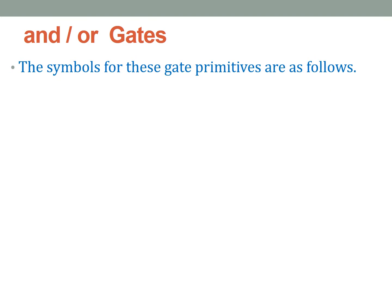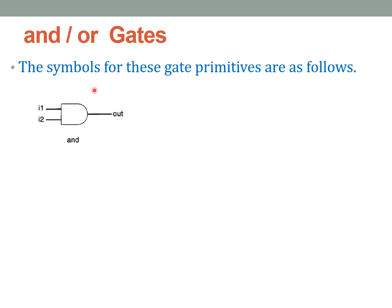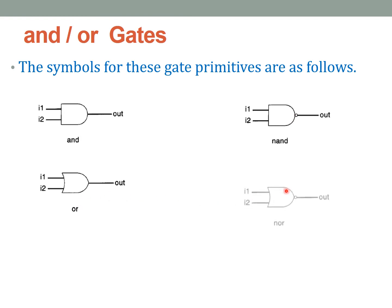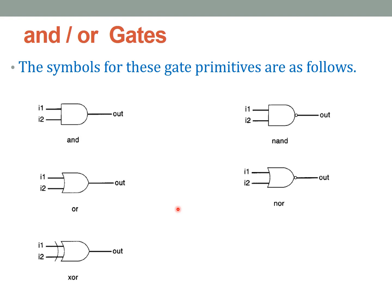Let us see the symbols for these gates. This represents the symbol of a two-input AND gate. This is the symbol of a two-input NAND gate with a bubble at the output. This represents a two-input OR gate. This is a two-input NOR gate. This is the symbol of a two-input XOR gate, and this is the symbol of a two-input XNOR gate. These are the symbols of the AND/OR gates available in Verilog.